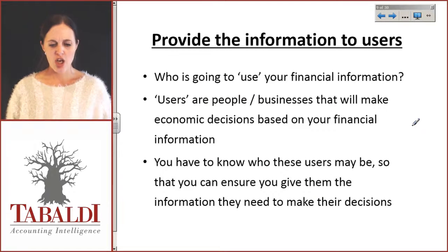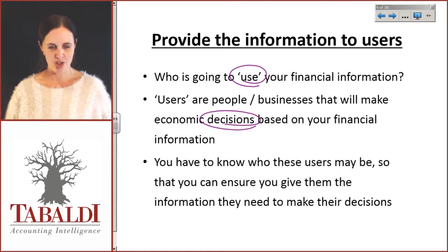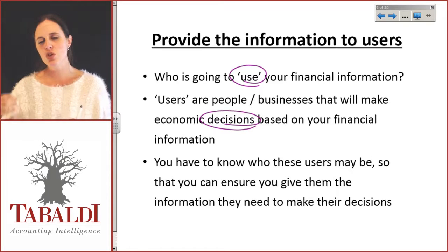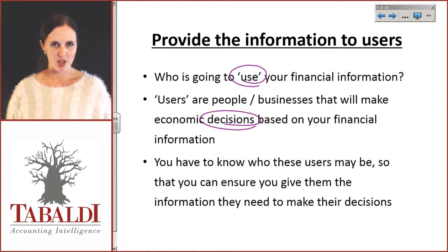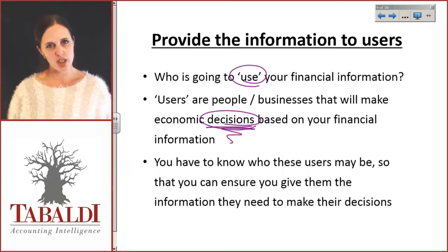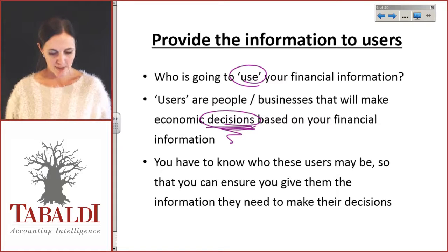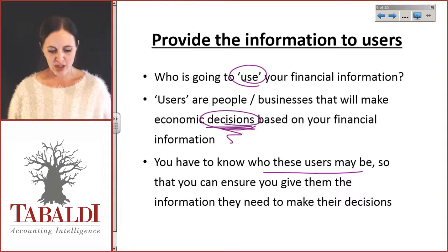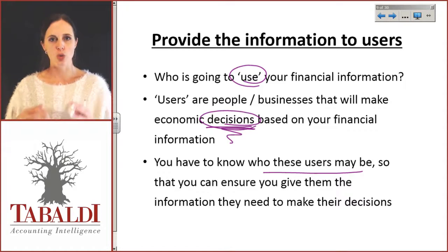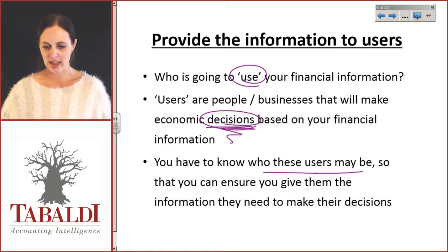We're going to provide this information to the users — people who are going to make some kind of monetary decision on the basis of my information. Either they're going to give me that study loan, but keep in mind: if I've lied to them or haven't told them everything about my financial situation, they were giving me that loan based on incorrect information, and maybe if they did know everything, they wouldn't give me the loan. So people are very interested in your information, and that means your financial statements have to be correct. You need to know who the users are so you can ensure you give them all the information they need.